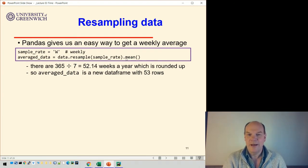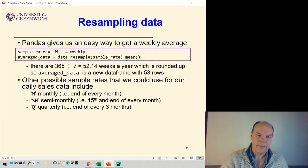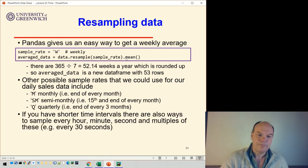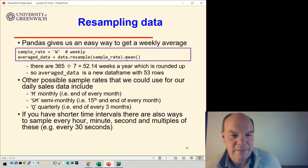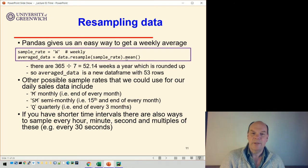Other things you could do: you could sample monthly using M, semi-monthly which would be twice a month on the 15th and end of every month, or quarterly. If you had data that was measured every second or minute, you can sample every hour, minute, second, and multiples of those things, like every 30 seconds.